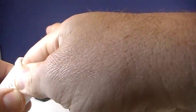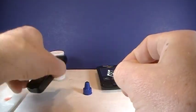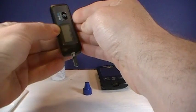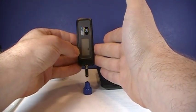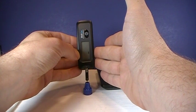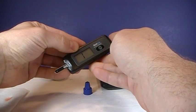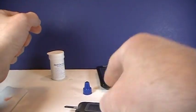We'll put the RelyOn test strip in there. Okay it's saying apply the blood so we can just apply that. Okay it's reading 134. So what does that mean?